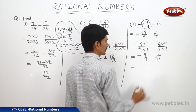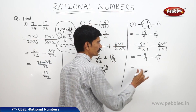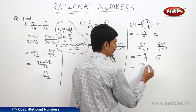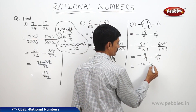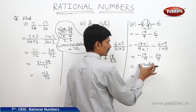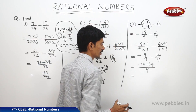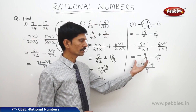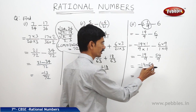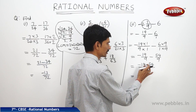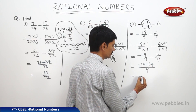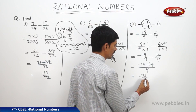Now the denominators are equal, so we can simplify both numerators: minus 19 minus 54 by 9. The two numbers both have negative signs, so we can add the two negative numbers. 54 plus 19 is 73, giving us minus 73 by 9.